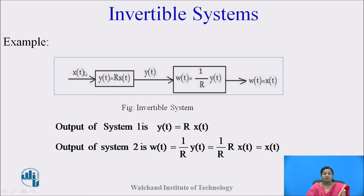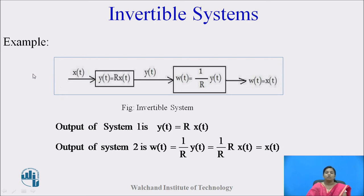Let us see an example. Here two systems are cascaded. The input to the first system is x(t), and the output from the first system is r · x(t). This y(t) is then applied to the second system, whose output is (1/r) · y(t). Substituting y(t) = r · x(t), we get (1/r) · r · x(t), and r cancels to give x(t). So the output from the second system is x(t), which is the original input — the input is recovered at the output. Such systems are invertible systems.